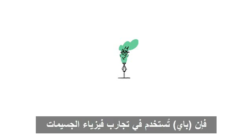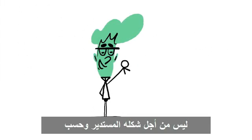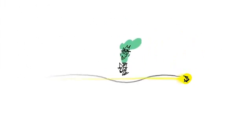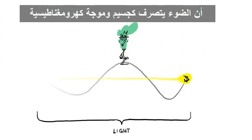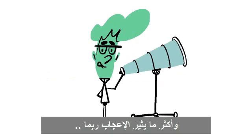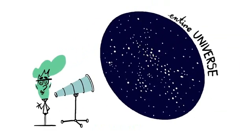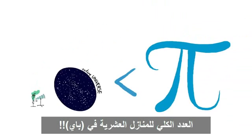As if that weren't enough, pi is used in particle physics experiments, such as those using the Large Hadron Collider, not only due to its round shape, but more subtly, because of the orbits in which tiny particles move. Scientists have even used pi to prove the elusive notion that light functions as both a particle and an electromagnetic wave, and perhaps most impressively, to calculate the density of our entire universe — which, by the way, still has infinitely less stuff in it than the total number of digits in pi.